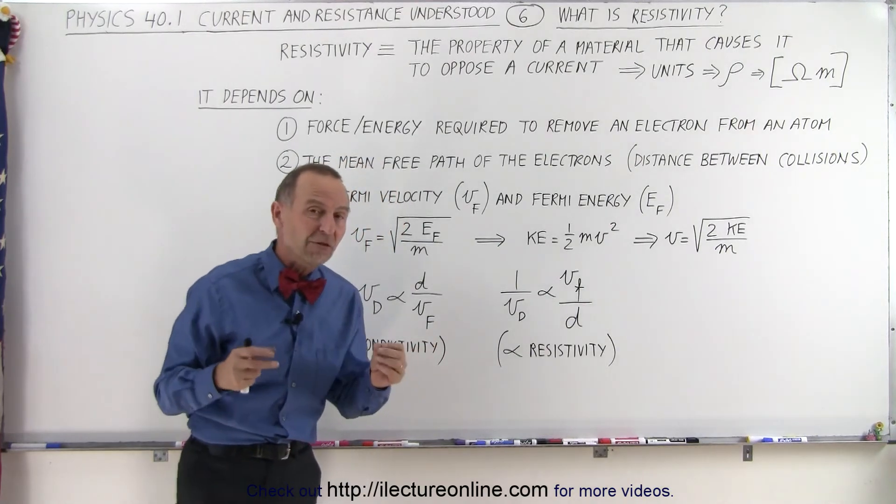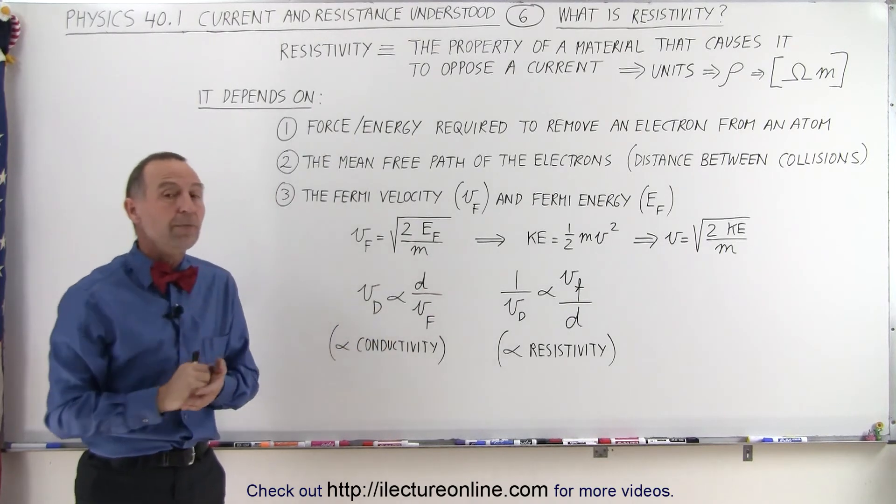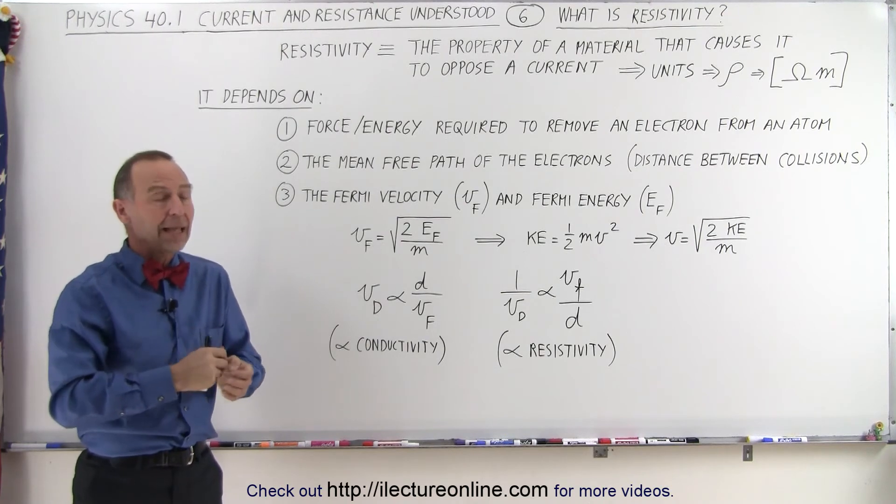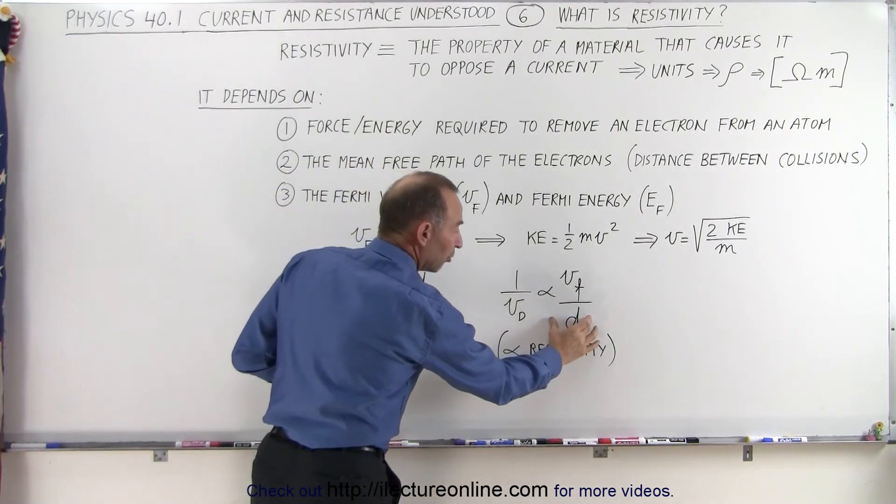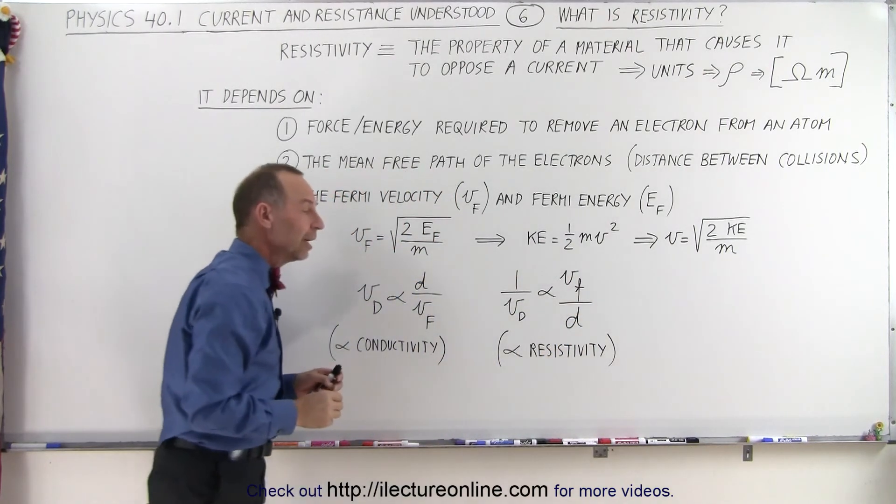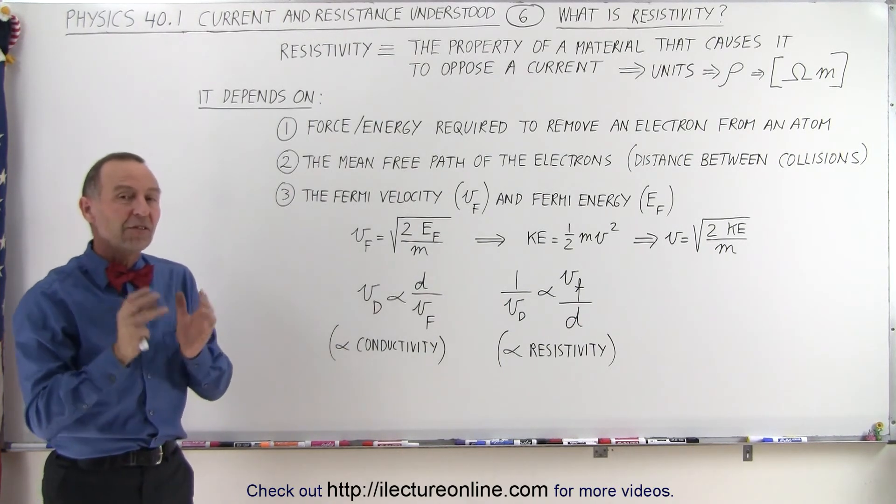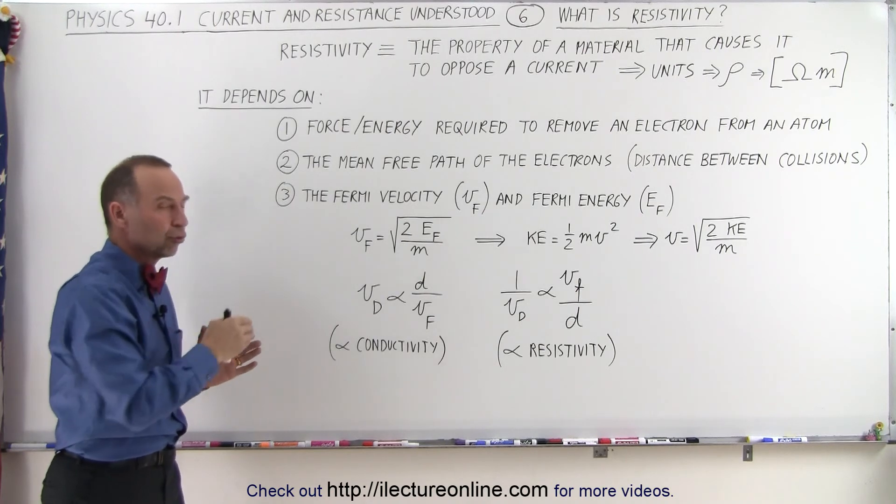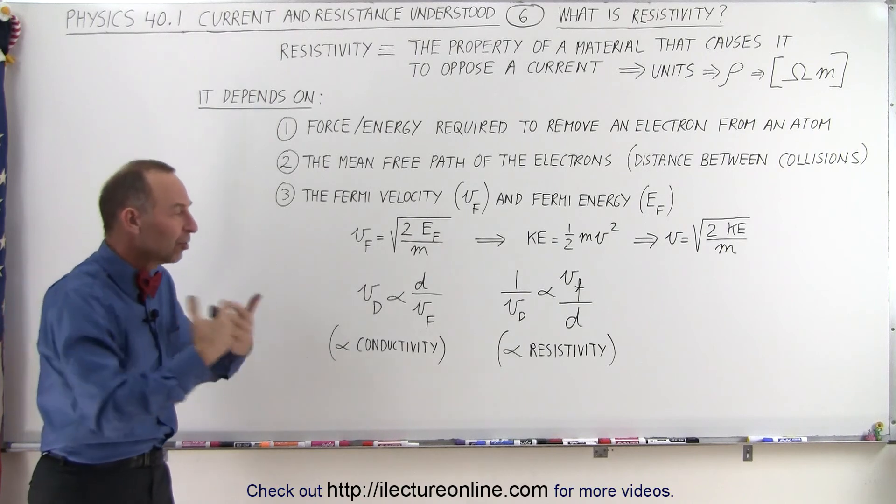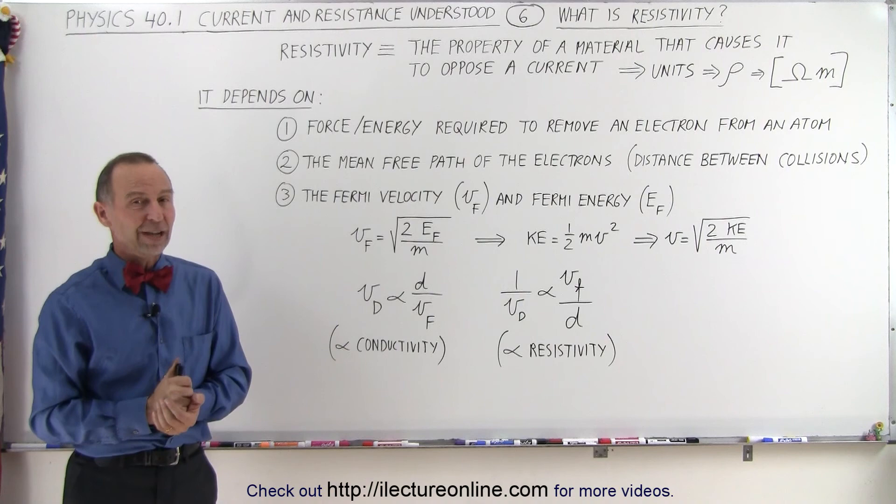So those are some of the major factors that control the ability for conductors to allow charges to flow. And it also involves the resistivity of the material, meaning that the smaller the distance between collisions, the greater the resistivity, and the greater the Fermi velocity, the greater the resistivity. So now we're going to take each one of these separately and take a closer look at what controls the flow of charges and what provides the opposition to the flow of charges, which we call resistivity. And that's how we define it.